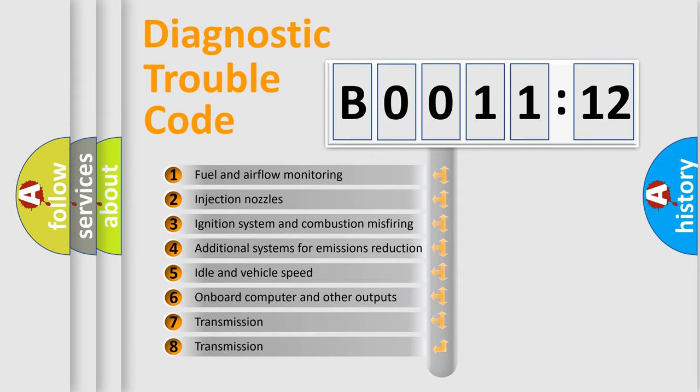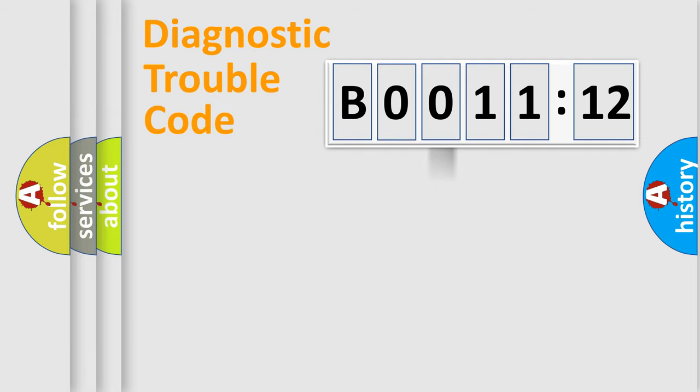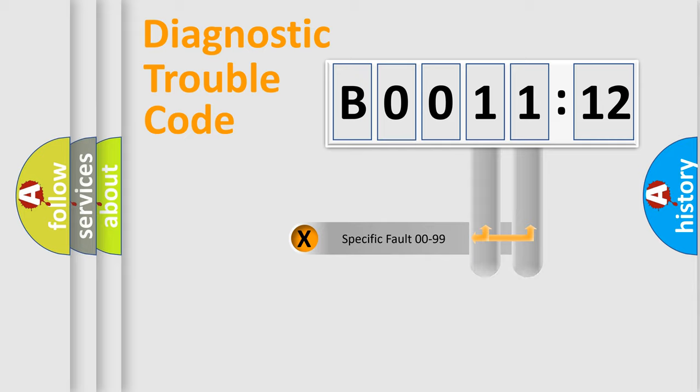The third character specifies a subset of errors. The distribution shown is valid only for the standardized DTC code. Only the last two characters define the specific fault of the group.